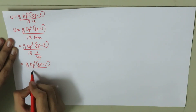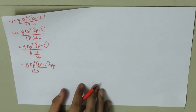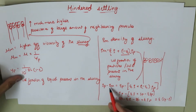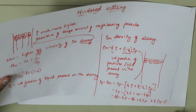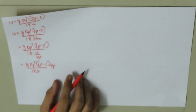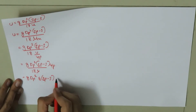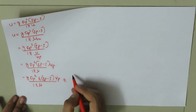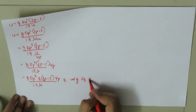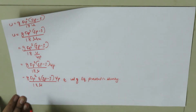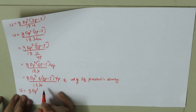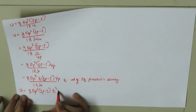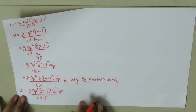Substituting mu_medium = mu / psi_P into the equation gives: u = g dp² (rho_p minus rho) psi_P / 18 mu. We also substitute the result that rho_p minus rho_m equals epsilon times (rho_p minus rho), giving: g dp² epsilon (rho_p minus rho) psi_P / 18 mu.